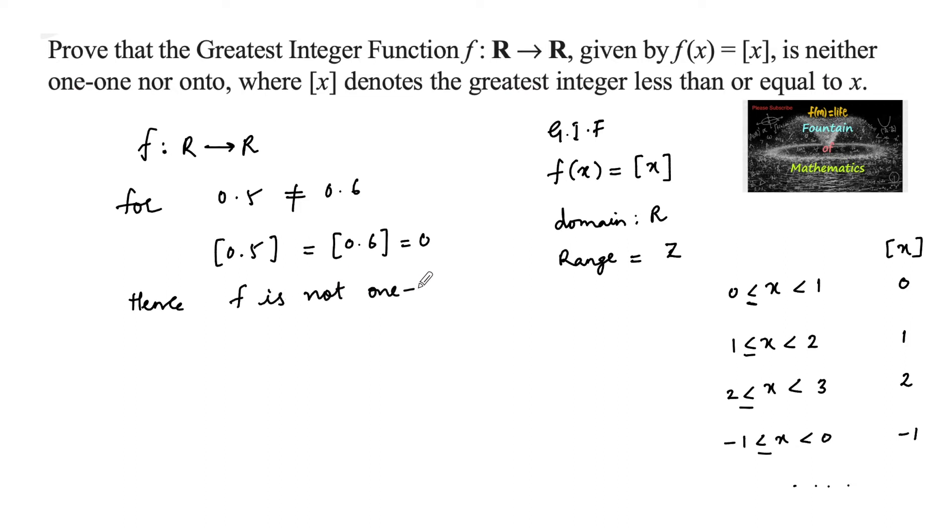f is not one-to-one because two distinct elements have the same image. Similarly, since the range of the step function is all integers,